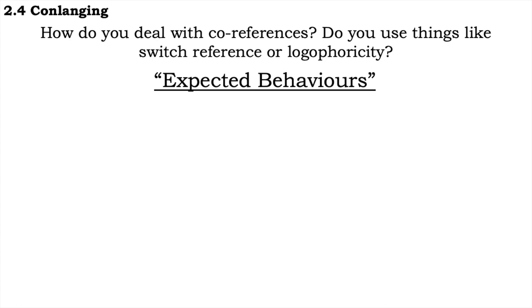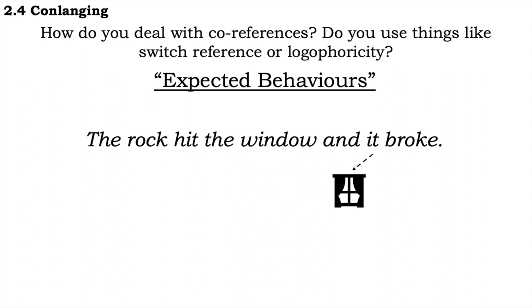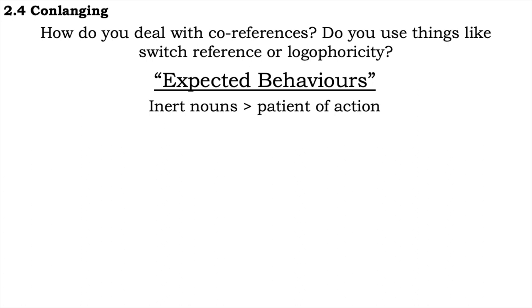So that's one way of dealing with co-references. Another is assumptions based on the expected behaviour of certain noun classes. Let's take the English: the rock hit the window and it broke. While it is almost guaranteed that this will mean the window broke, it could mean the rock broke. However, with the sentence, the rock hit the window and broke, it must be the rock that breaks. In Bjarkemi, nouns belonging to the inert classes have no obviation associated with them. But there is an assumption that these inert nouns will be the patient of an action.